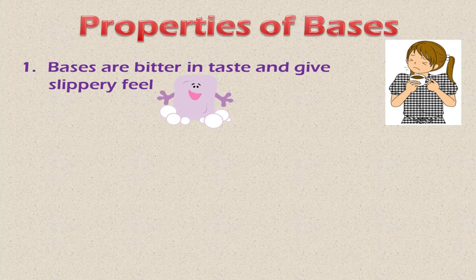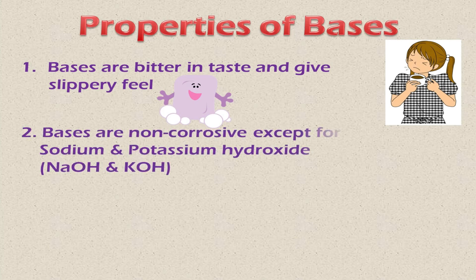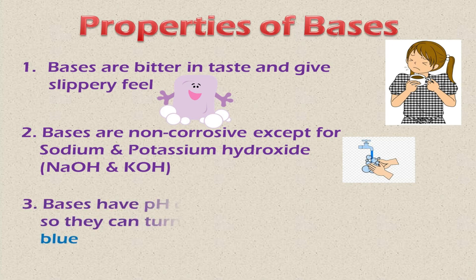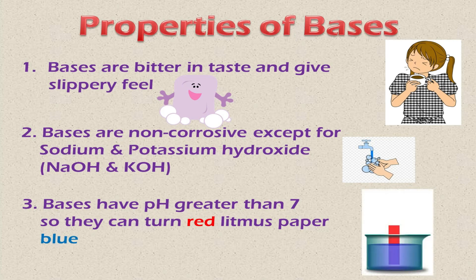Now we will discuss some properties of bases. Bases are bitter in taste and give a slippery feel. As I mentioned, bases or alkalis are present in many household substances used for washing, so every such soapy thing is slippery to the touch. Bases are generally non-corrosive, meaning you can touch them, but sodium hydroxide and potassium hydroxide are sometimes corrosive. Bases have a pH greater than seven, so they can turn any red litmus paper blue.